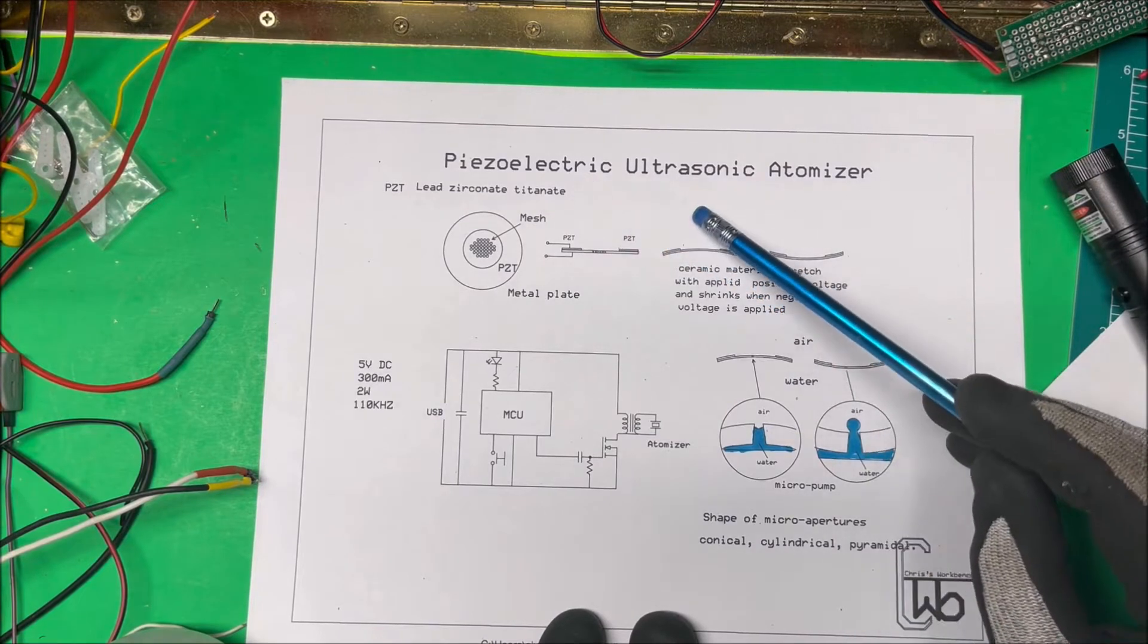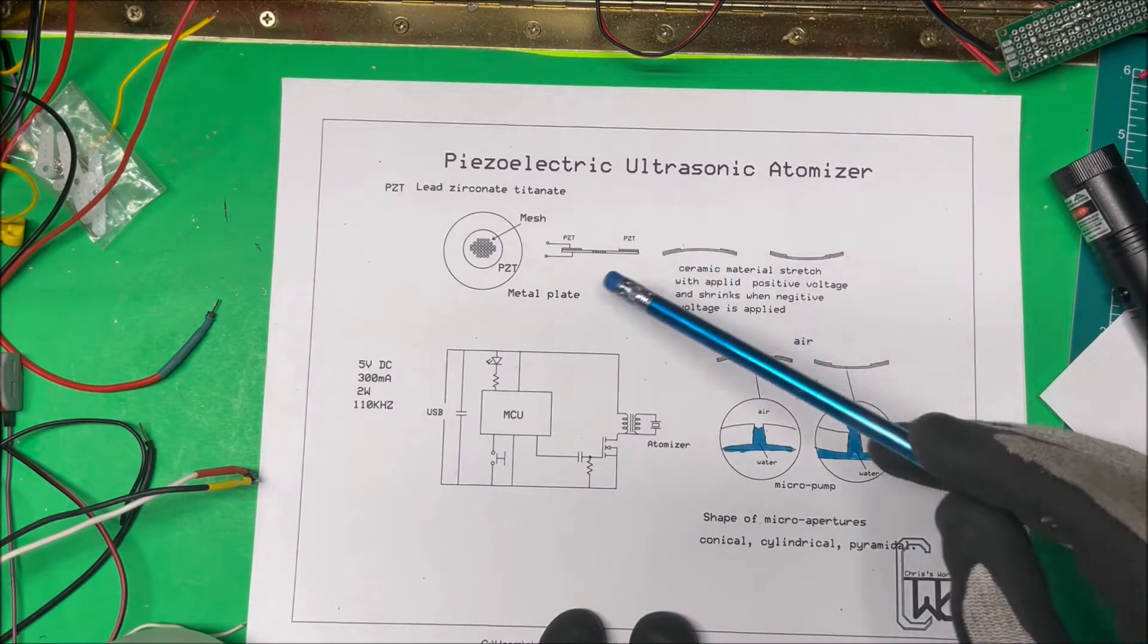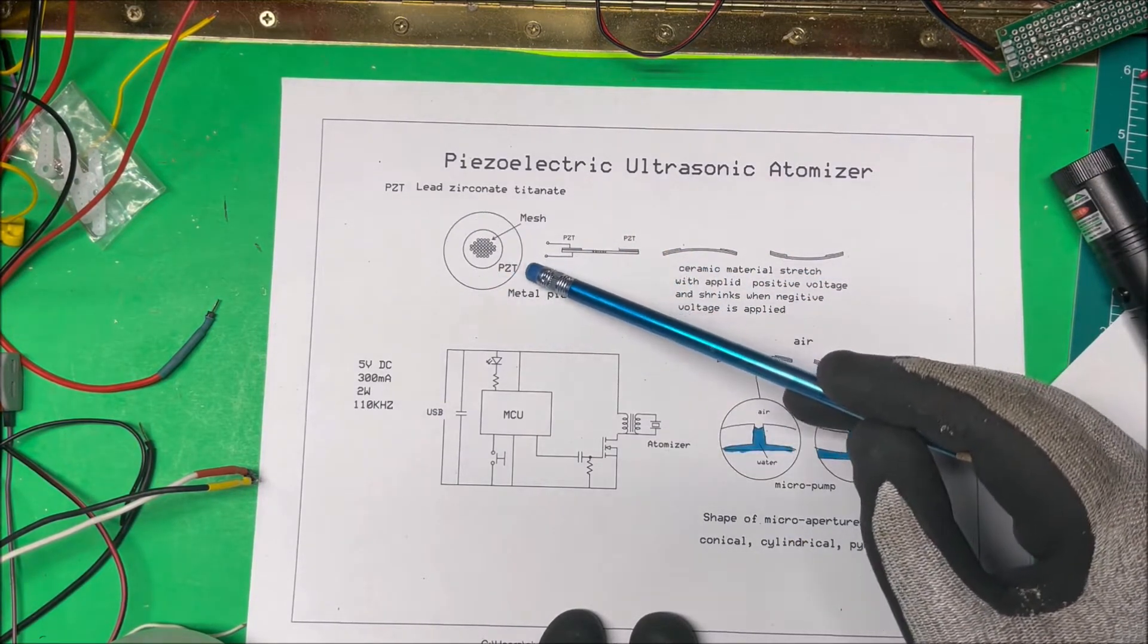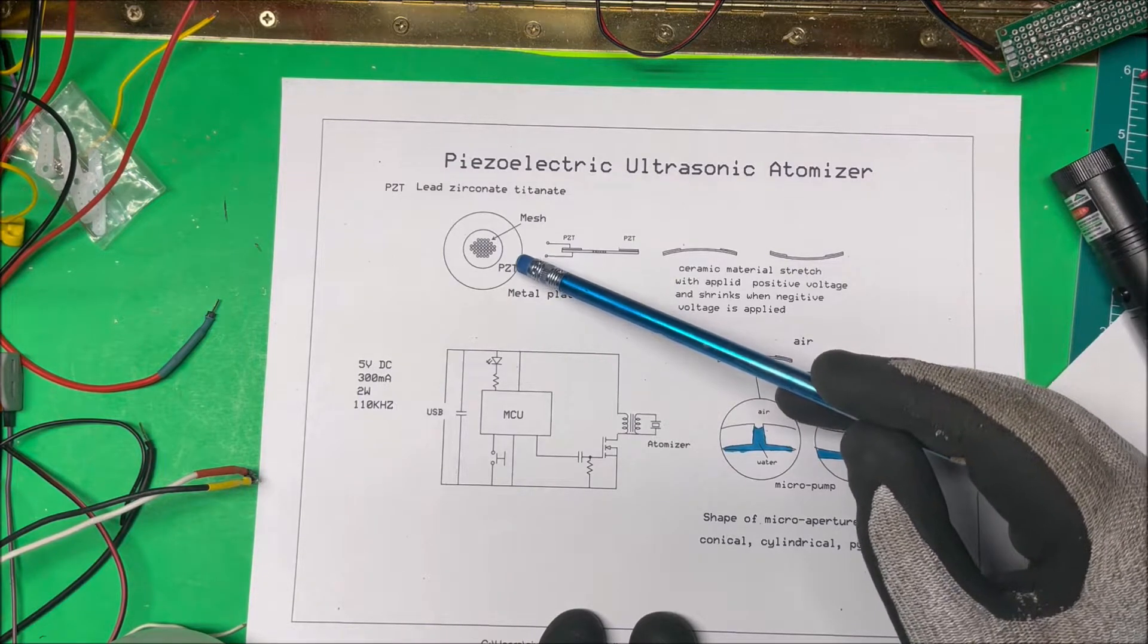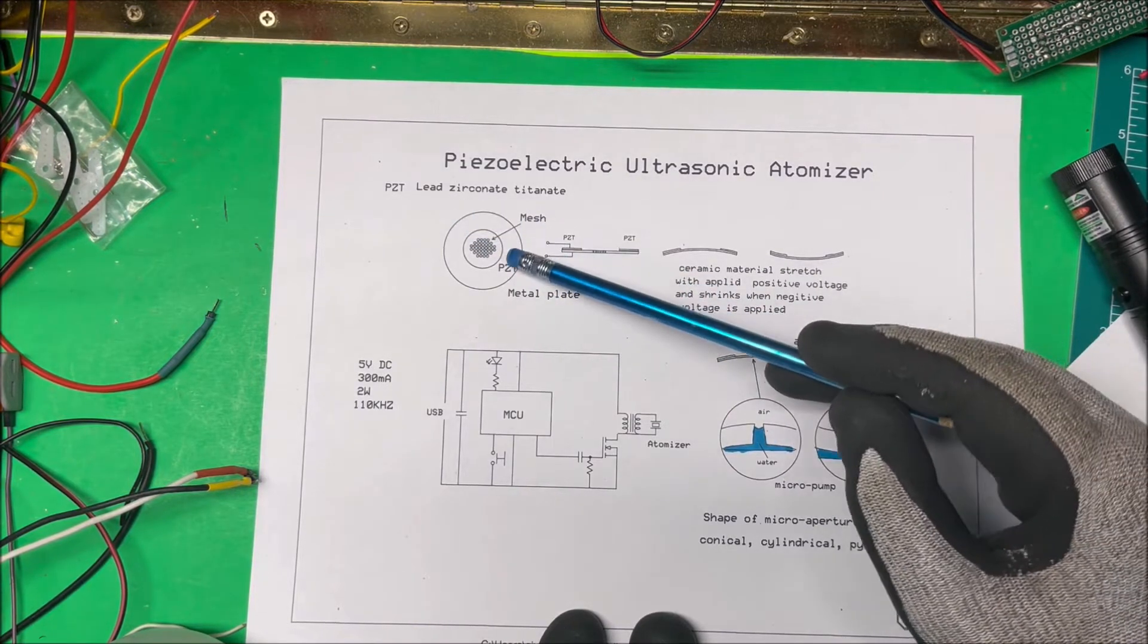Let's take a look at a piezoelectric ultrasonic atomizer. Now they're made similar to a piezoelectric buzzer and they have this PZT material.